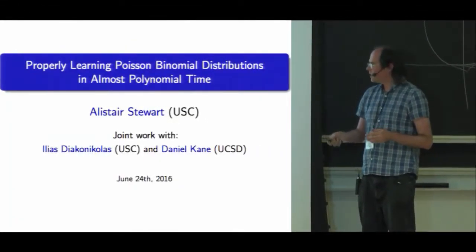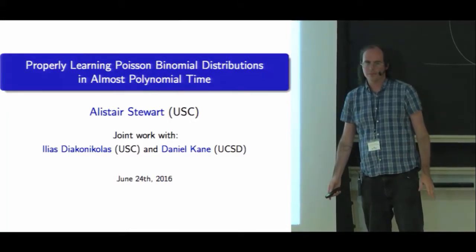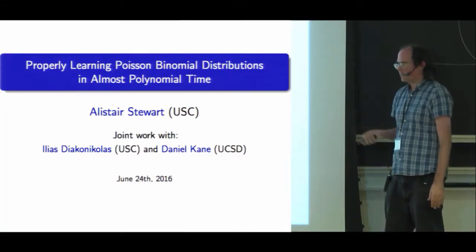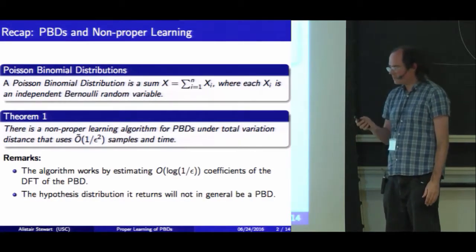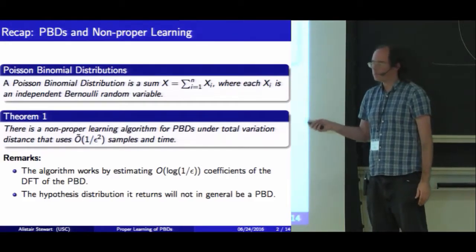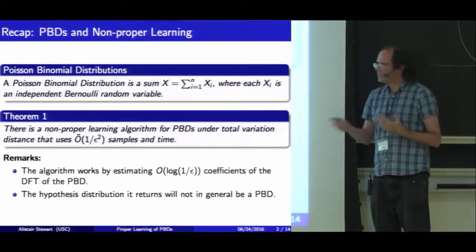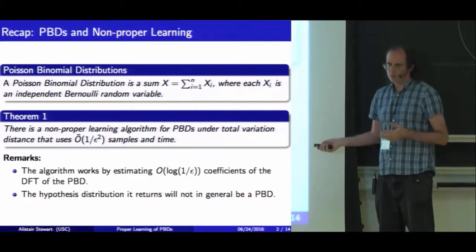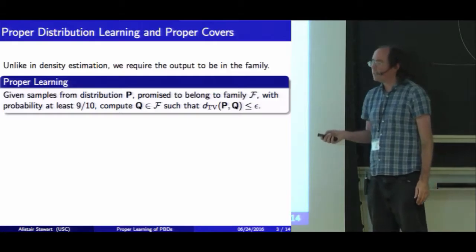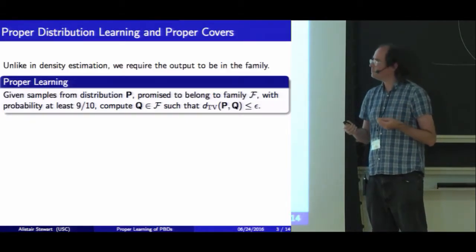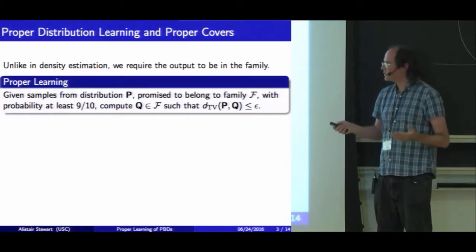This talk will be on the question left open at the end of the last talk: how to properly learn Poisson binomial distributions. A Poisson binomial distribution is a sum of independent but not necessarily identical Bernoullis. We gave a non-proper learning algorithm expressed in terms of log(1/ε) coefficients of the discrete Fourier transform. The question we're interested in is whether we can find a distribution close to the one we get samples from, which is a Poisson binomial distribution and not just any distribution.